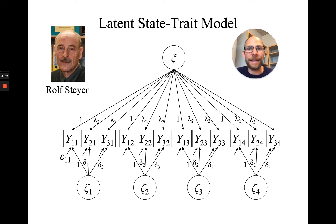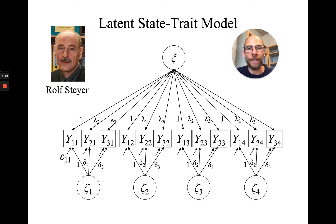We can also have extended latent state trait models where we have method factors to take into account that items may not measure exactly the same trait component. For example, a model with indicator-specific traits could be used, or a model with a general trait factor plus additional method factors that account for stable item-specific or indicator-specific effects. Since this model has orthogonal factors — the trait factor uncorrelated with the zeta factors, and those uncorrelated with measurement error epsilon — we can break down the variance of the observed variables into trait variance, state residual variance, and measurement error variance.